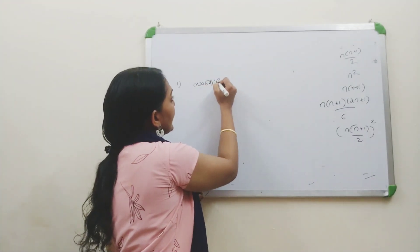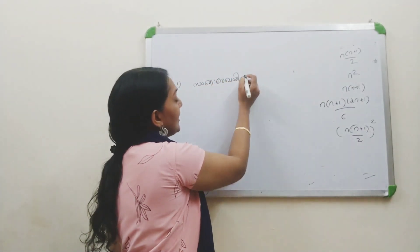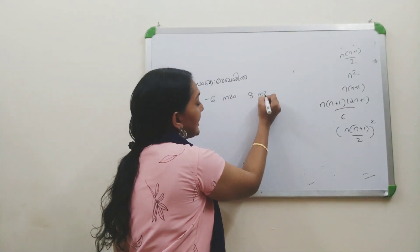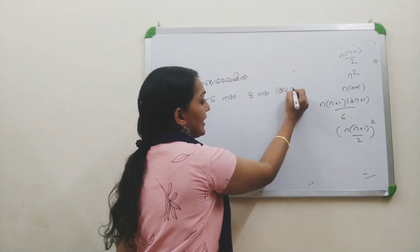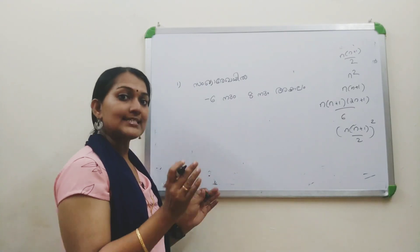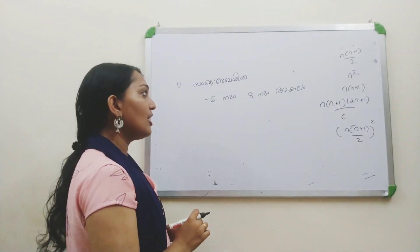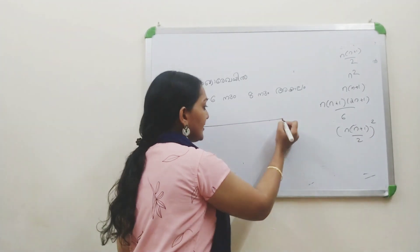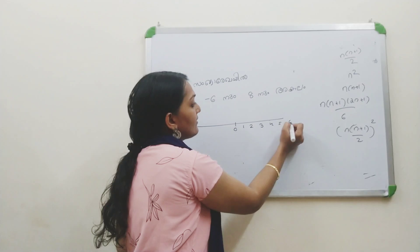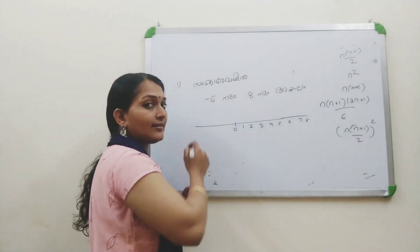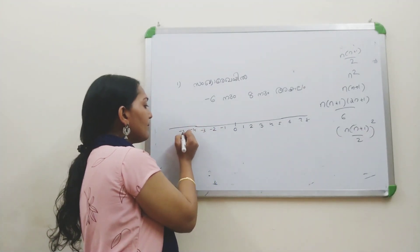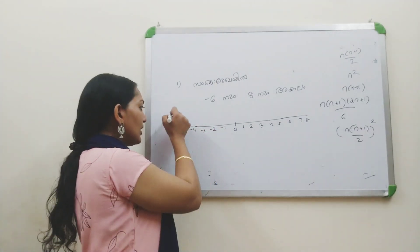There are 2 numbers: minus 6 and plus 8. On a number line, 0 is at the center. The positive numbers go to the right: 1, 2, 3, 4, 5, 6, 7, 8. The negative numbers go to the left: minus 1, minus 2, minus 3, minus 4, minus 5, minus 6.